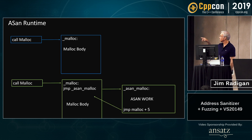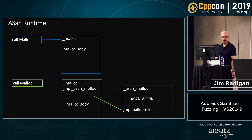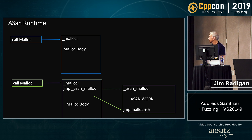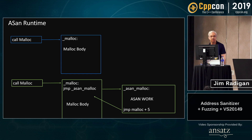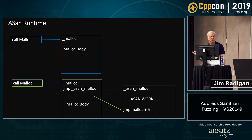Now I'll talk about the runtime. A call to malloc goes to the body of code for malloc, and what the ASAN runtime does on initialization is it hooks that — it's malware. It takes the first five bytes out of malloc, puts them in the ASAN malloc, executes them, does work to keep track of pointers, what you malloc'd and their sizes, then jumps back to the original malloc after those five bytes to continue regular functionality. It does that for malloc and free, new and delete, memset, memcopy — all the things you'd use in the CRT for manipulating memory.